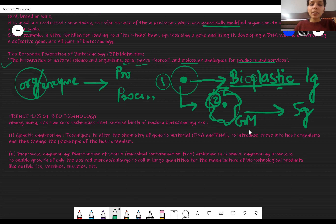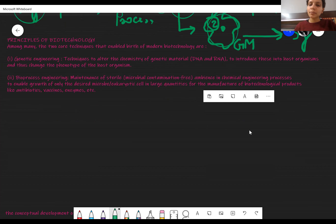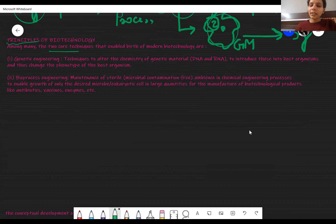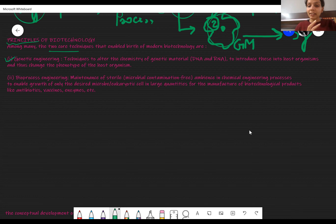Then we are going to proceed further to the principles of biotechnology. In principles of biotechnology there are multiple principles, but there are two core techniques which I am going to explain here. The first is genetic engineering, and the second is bioprocess engineering. Many complex techniques are used in biotechnology as it progresses, but these two are the basic techniques that are always integrated.